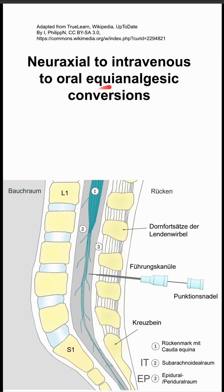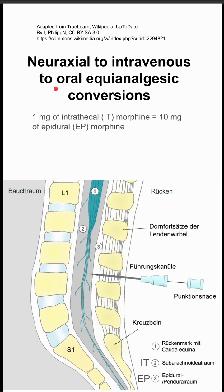The effectiveness of a drug, like an analgesic, depends on the concentration that you give and where you give it. It's possible to convert between the neuraxial delivery of opioids to the intravenous delivery of opioids, to oral opioids.